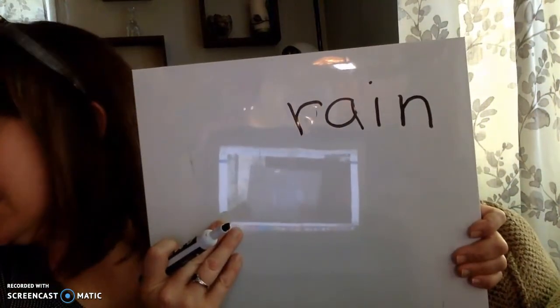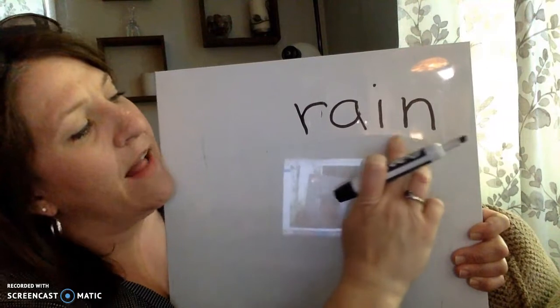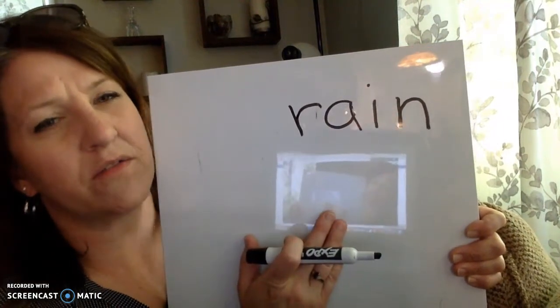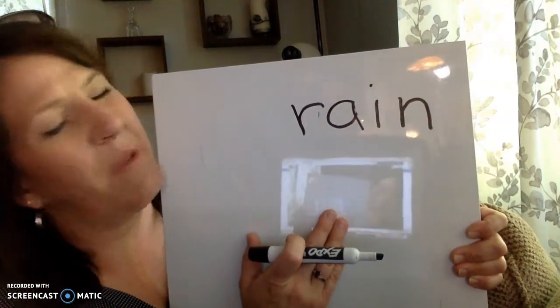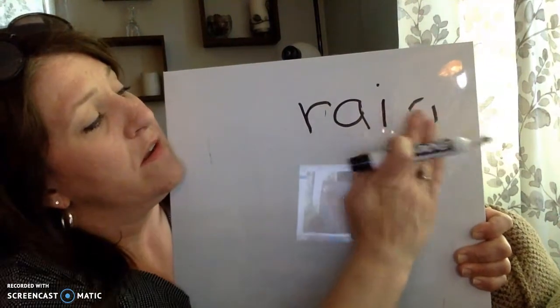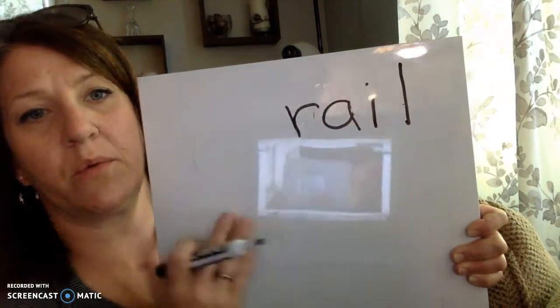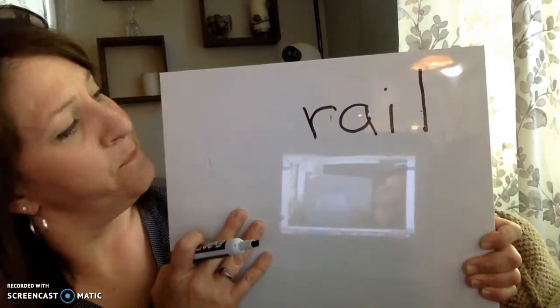We're going to change rain into rail. Hold on to the rail as you walk down the stairs. Rail. Rail. I still hear that A in the middle, just like in rain and pain. Rail. The ending is changing, but the A-I stays, because it's in the middle of the word. I hear A in the middle. Rail.